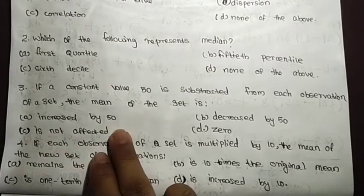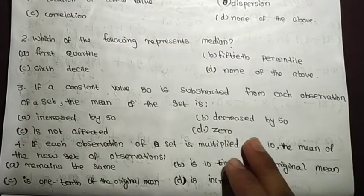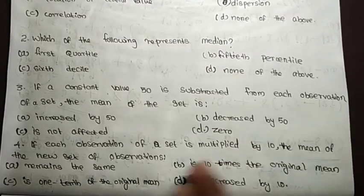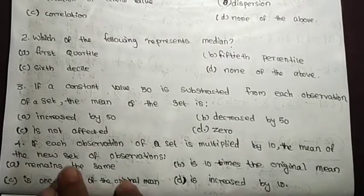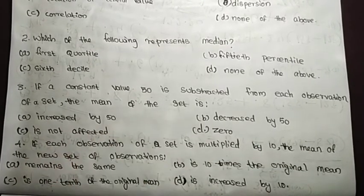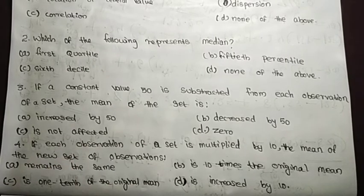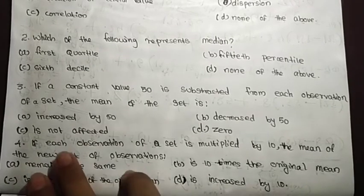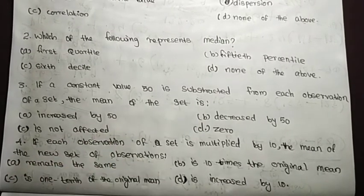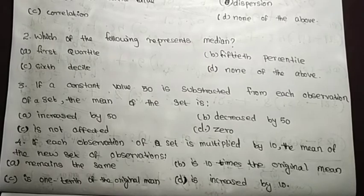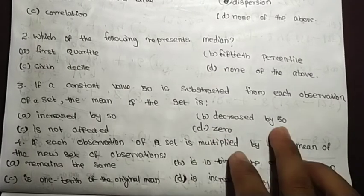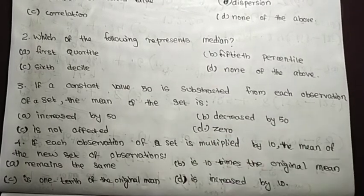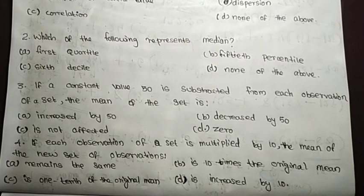The options are: increased by 50, decreased by 50, is not affected, or zero. The correct answer is that the mean is decreased by 50.